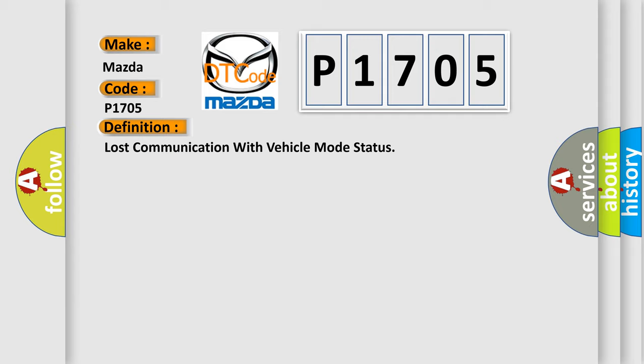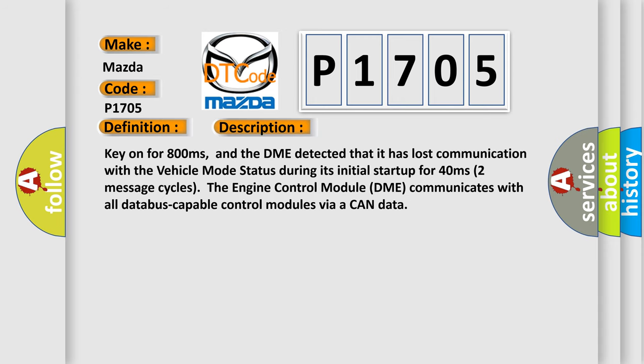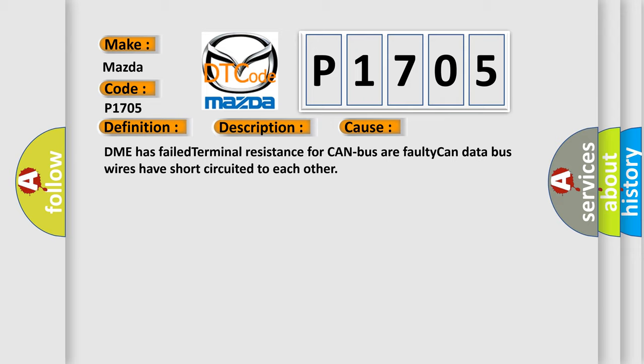The basic definition is Lost communication with vehicle mode status. And now this is a short description of this DTC code. Key on for 800 milliseconds, and the DME detected that it has lost communication with the vehicle mode status during its initial startup. For 40 milliseconds, two message cycles, the engine control module DME communicates with all data bus-capable control modules via a CAN data bus. This diagnostic error occurs most often in these cases: DME has failed terminal resistance for CAN bus.